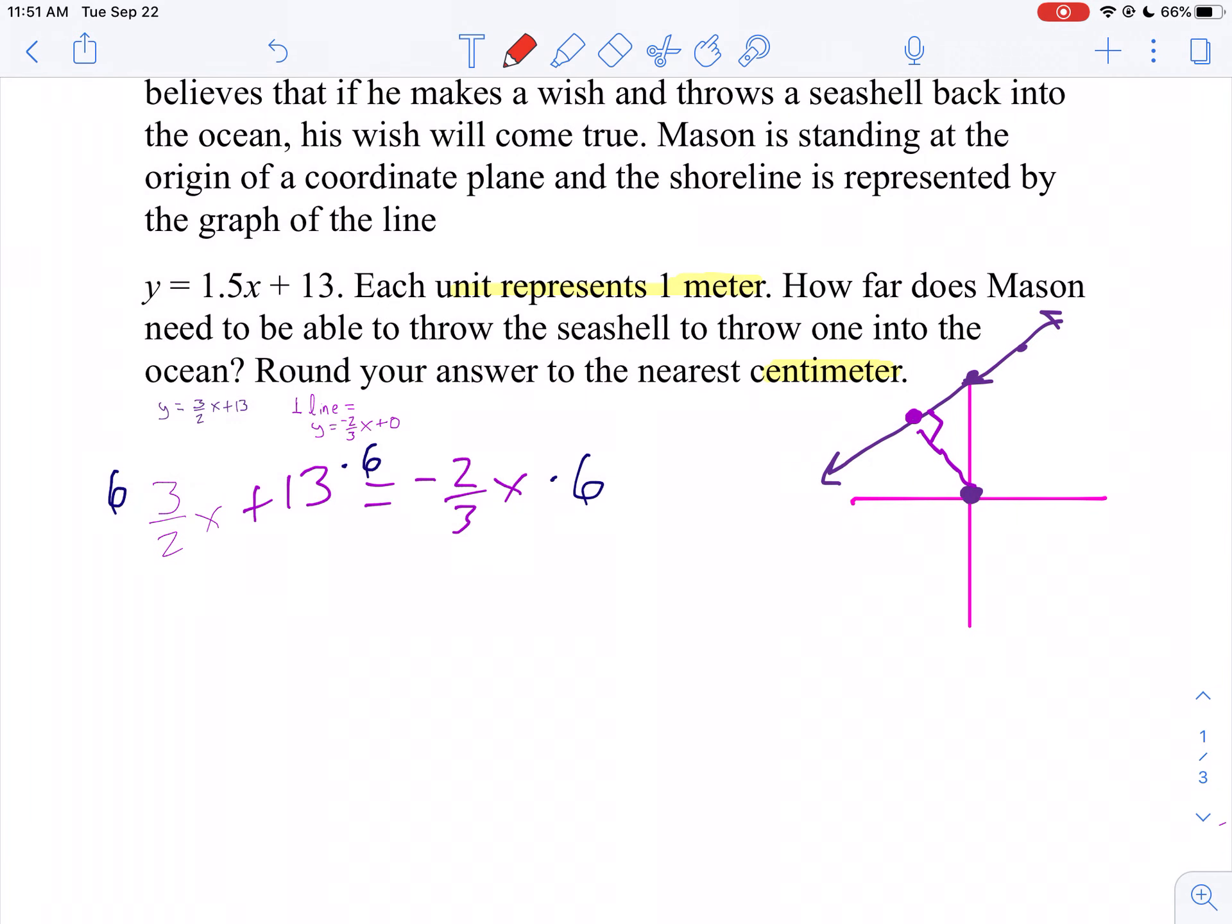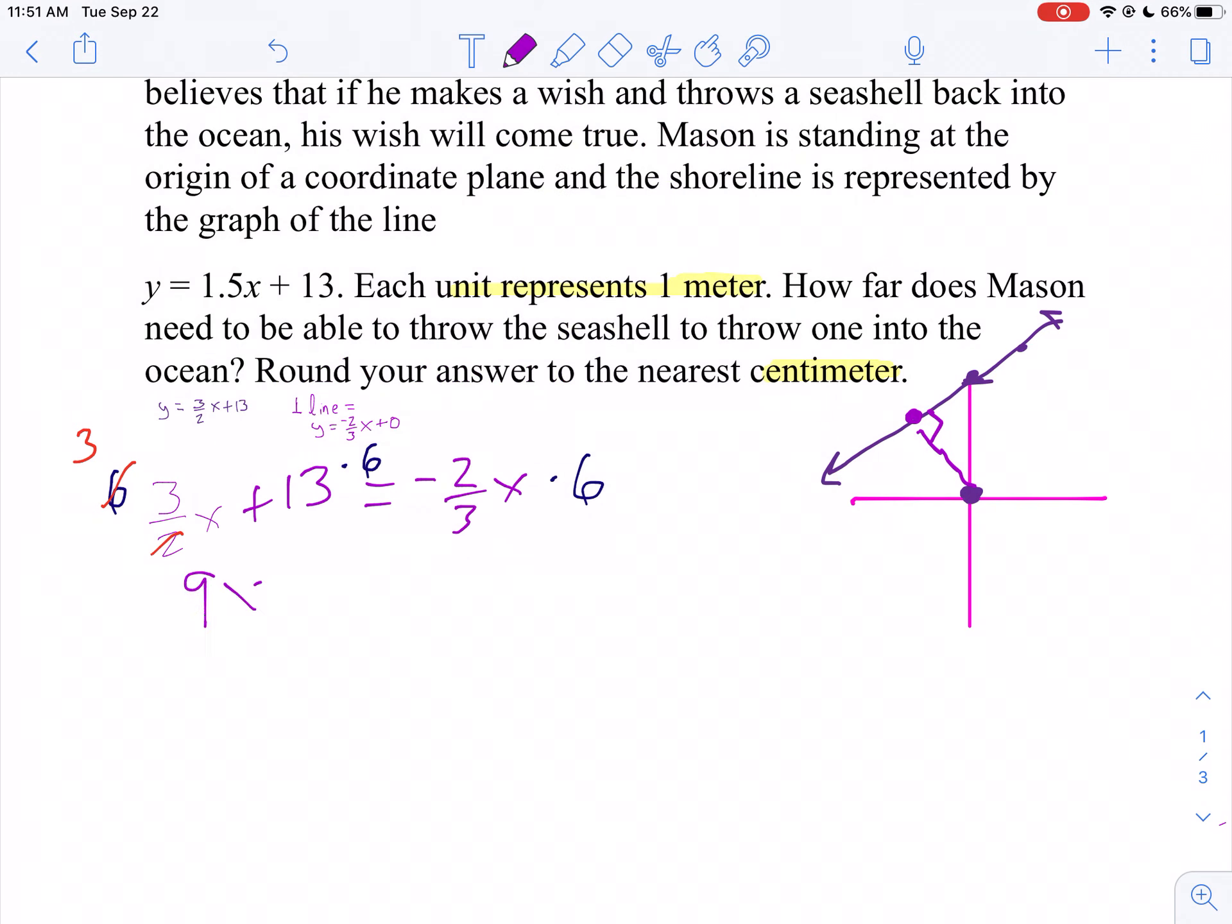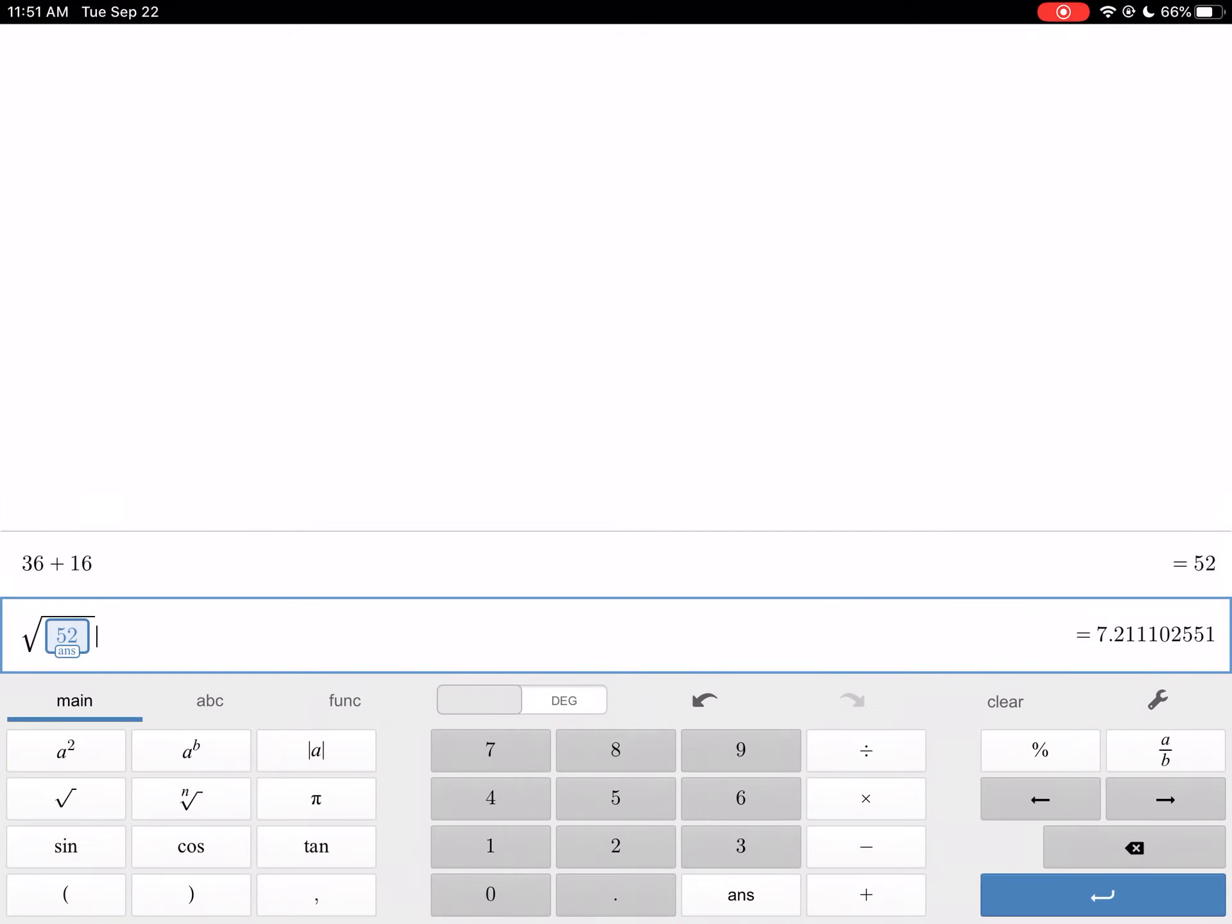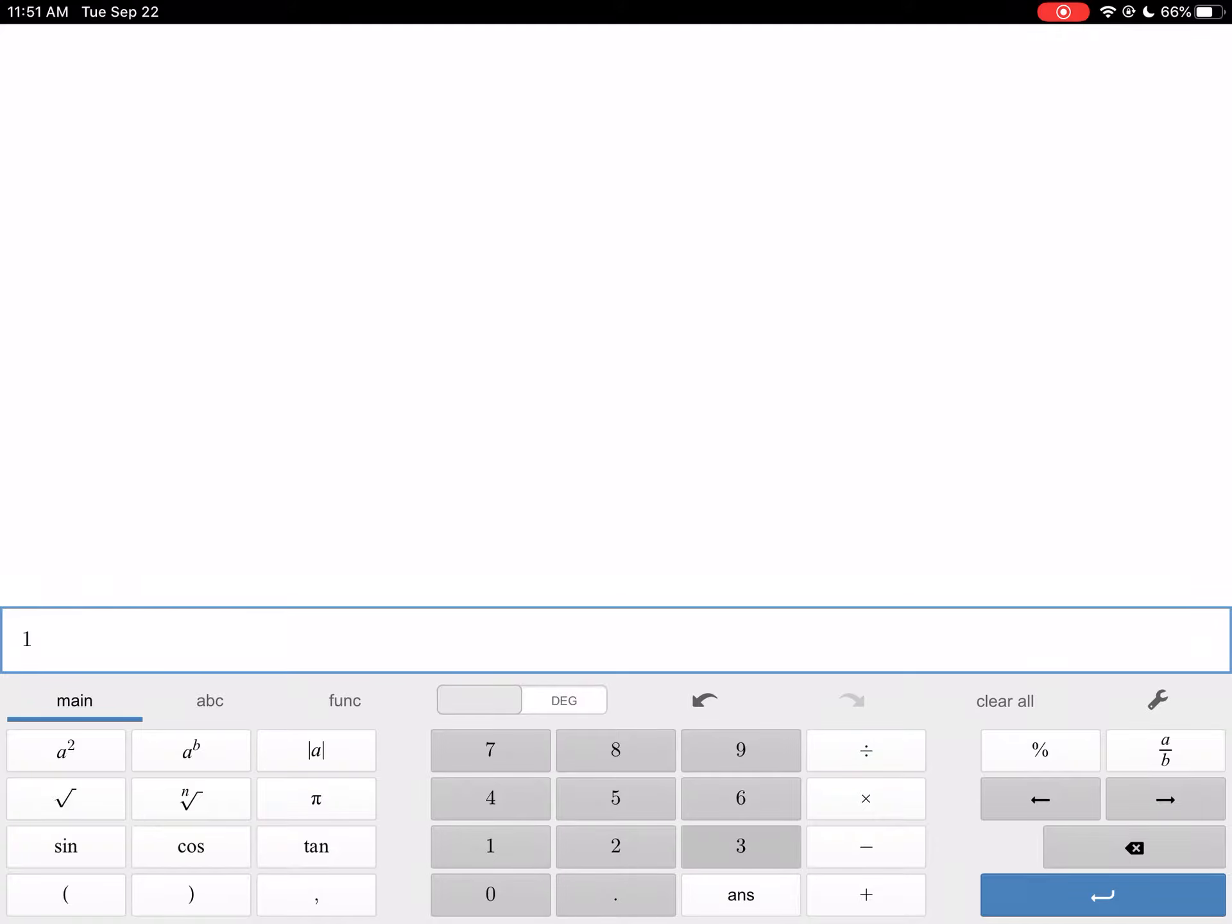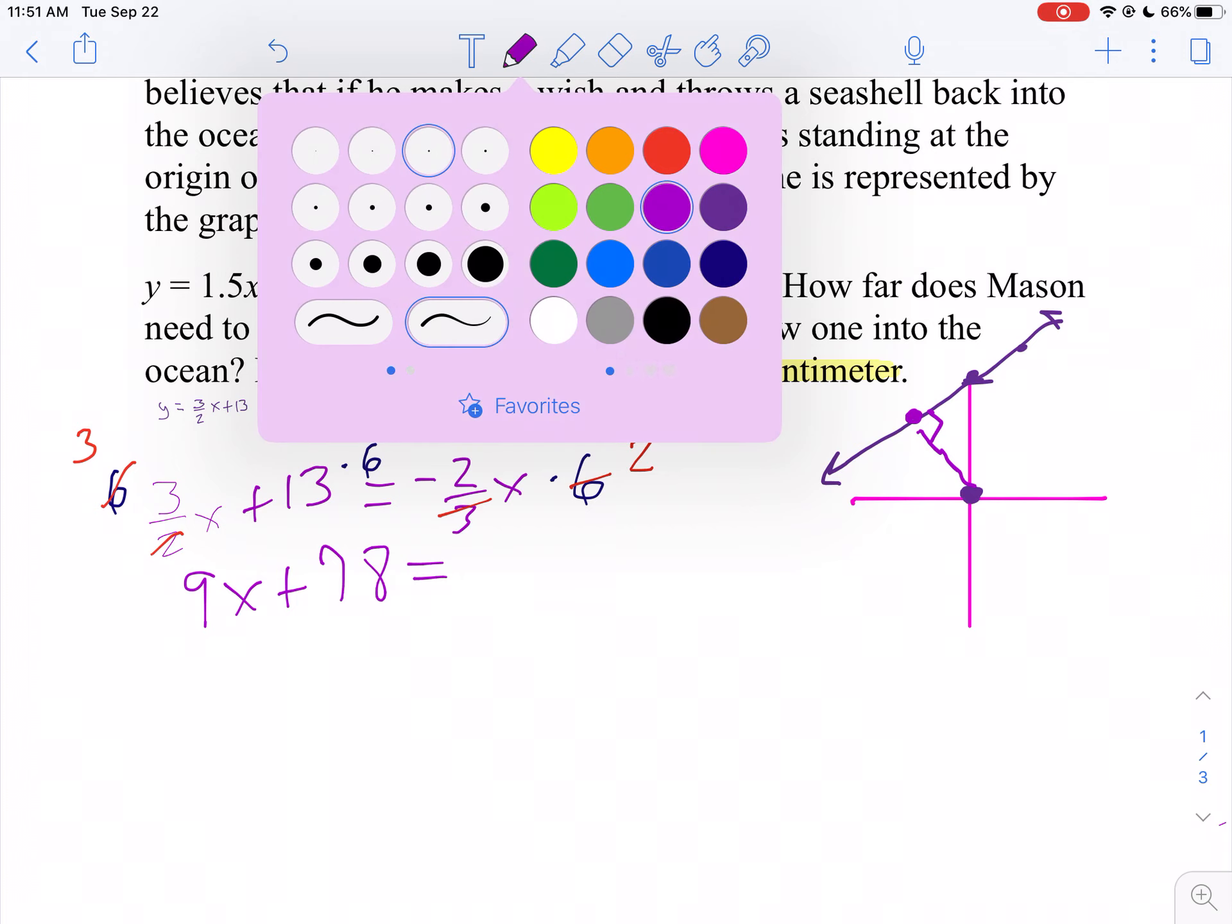Don't multiply 6 times 3 and put it over 2. Reduce it. 2 goes into 6 three times, 3 times 3, that will be 9x. Plus 13 times 6, let's use a calculator for that. 13 times 6 is 78. So plus 78 equals 3 goes into 6 two times, so 2 times negative 2, that'll be negative 4x.